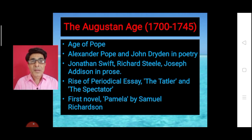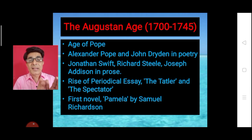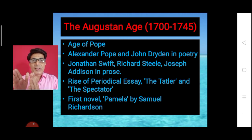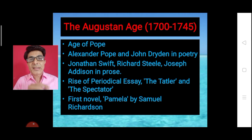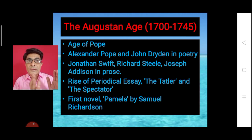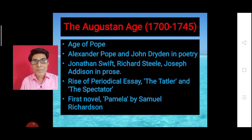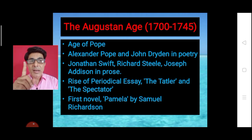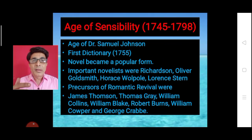If you come to the second half of the 18th century, that period is considered as the age of novels. Dividing the 18th century into two halves, the first 50 years is the period of periodical essays by Steele and Addison, while the second half is known as the age of novels. The first novel in the entire history of English literature was published in 1741, written by Samuel Richardson — and that first novel was Pamela.